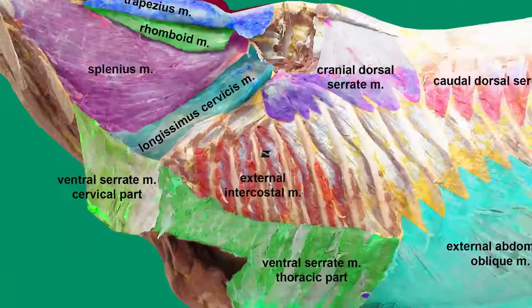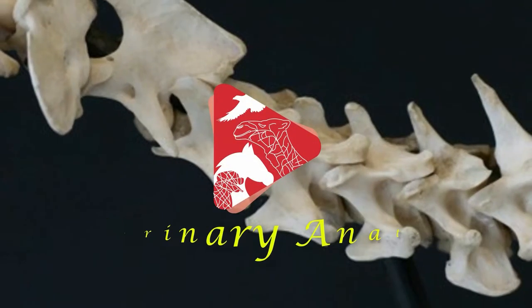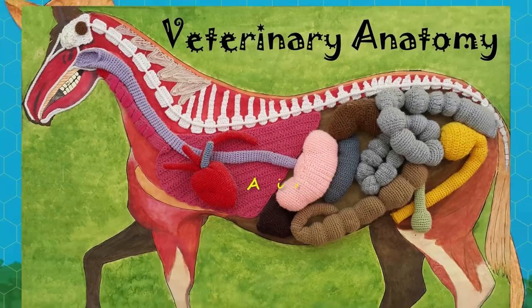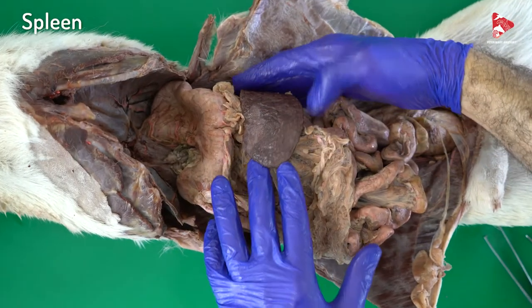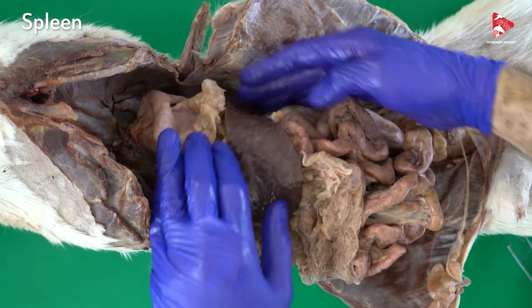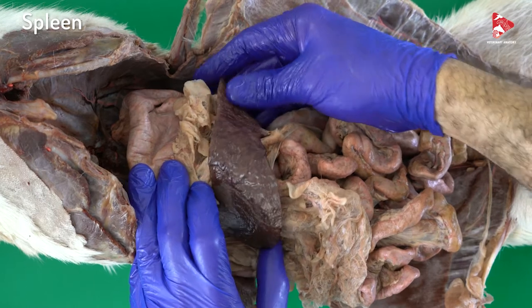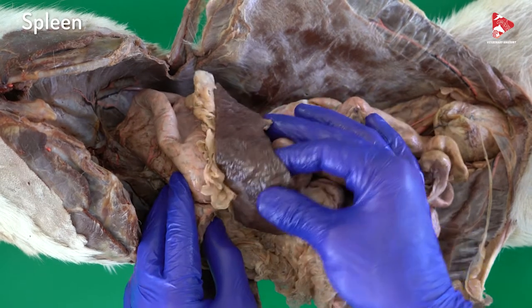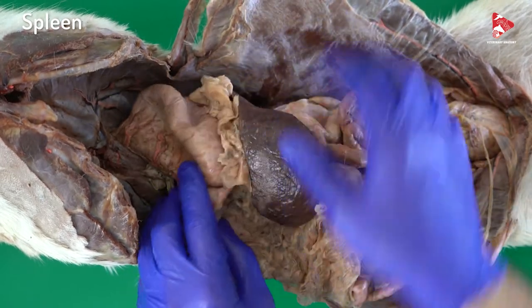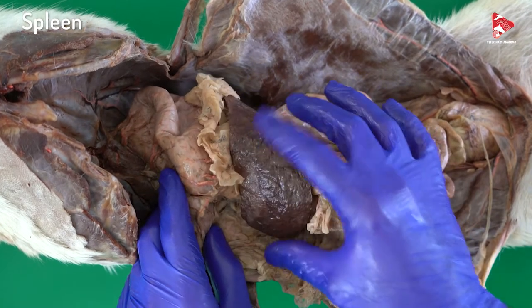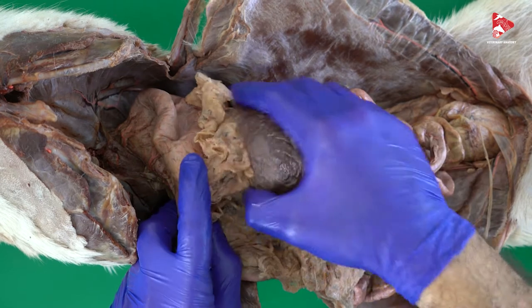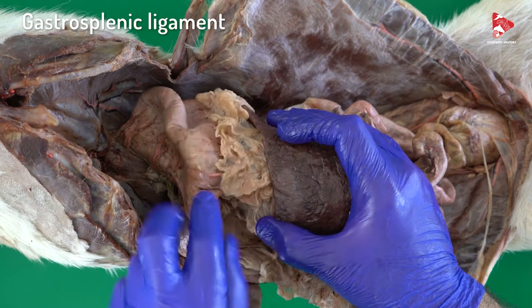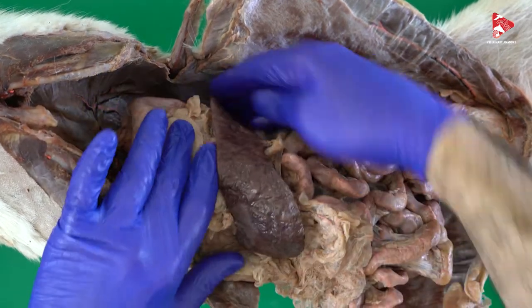The spleen is located more on the left side, starting dorsally with the head of the spleen, and after that moves ventrally, following the greater curvature of the stomach. At the greater curvature, the spleen is fixed in its position by the greater omentum and by the ligament extending between the spleen and the stomach — the gastrosplenic ligament.